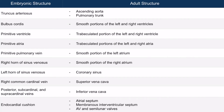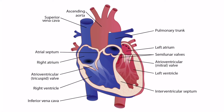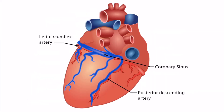Here's a table that summarizes what we just covered — you can see what each embryonic structure becomes in an adult. Here's an image of the adult heart, and we can see many of these structures, such as the SVC, IVC, right atrium, and so forth. If you look at a posterior view of the heart, we can see the coronary sinus, which drains blood from the heart into the right atrium.